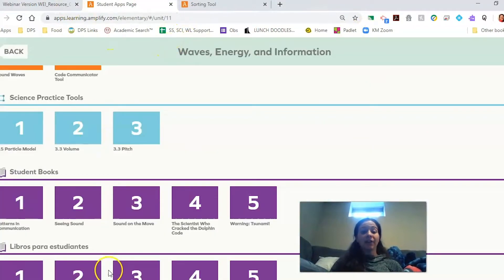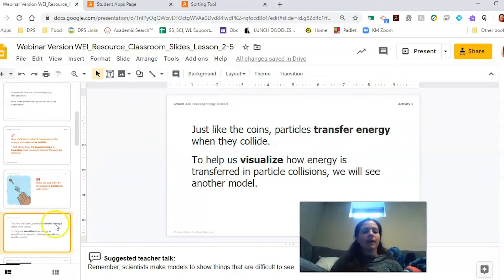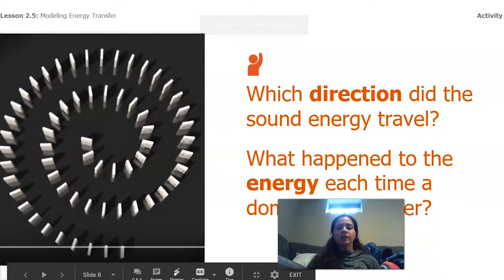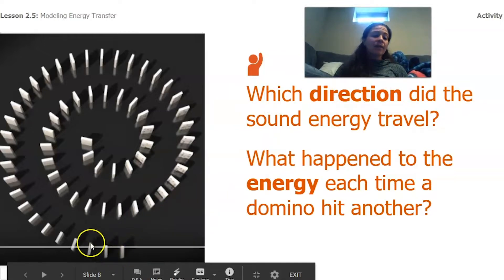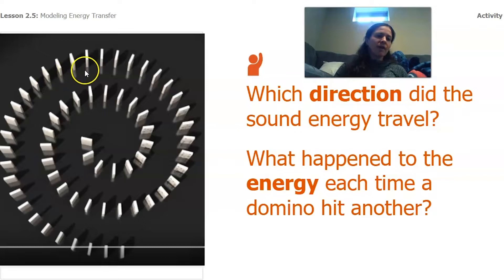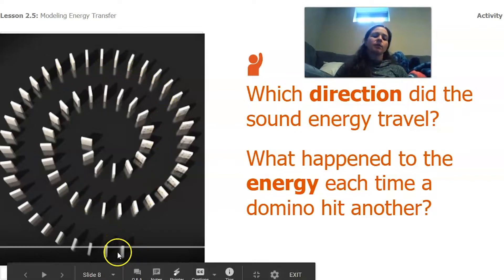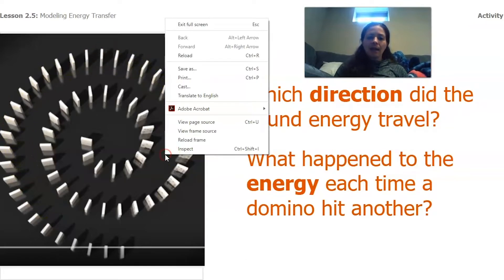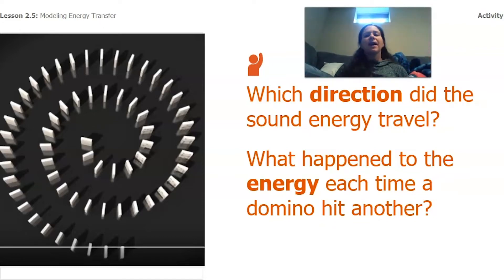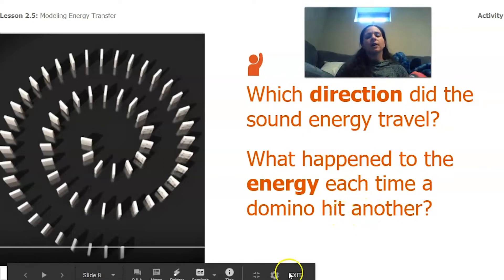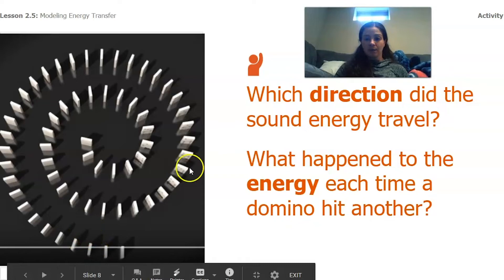So that domino model is the different type of model I was thinking of. The first question is: what direction did the sound energy travel? The energy started at one end and traveled in the same direction along the same line. Now, what happened to the energy each time a domino hit another? This one hit the next one, and the word I'm going to use is that the energy transferred. Energy started with the very first domino, which bumped the next one, which transferred the energy to the next one, and so on.